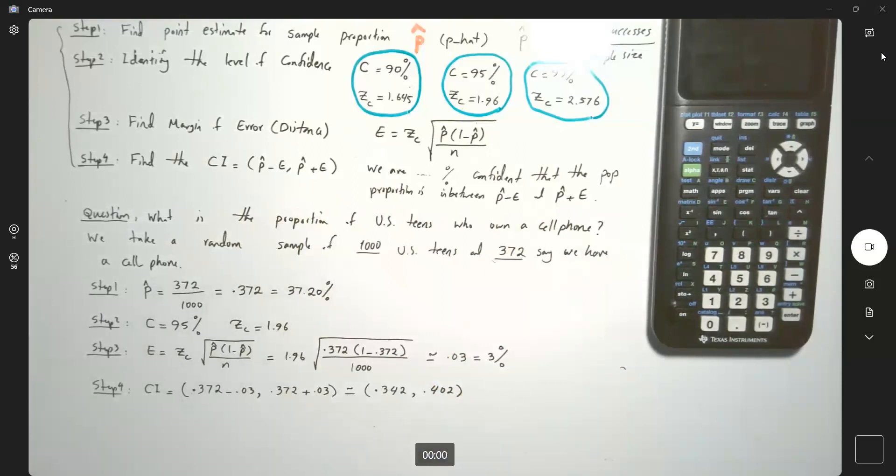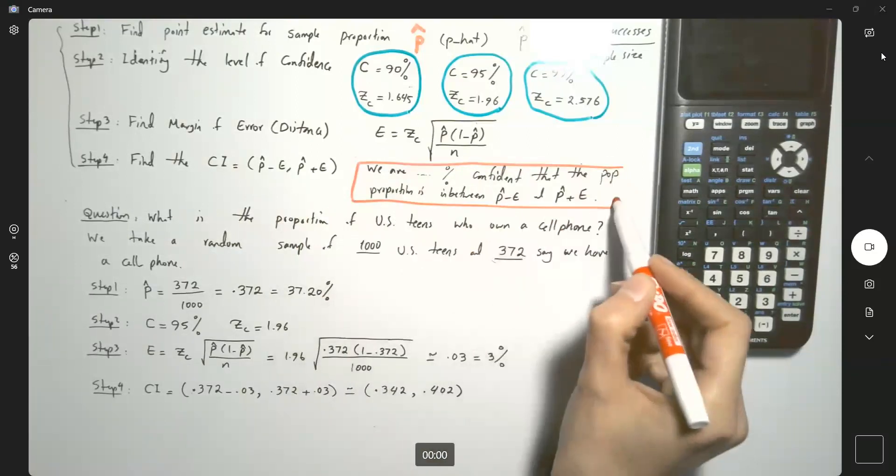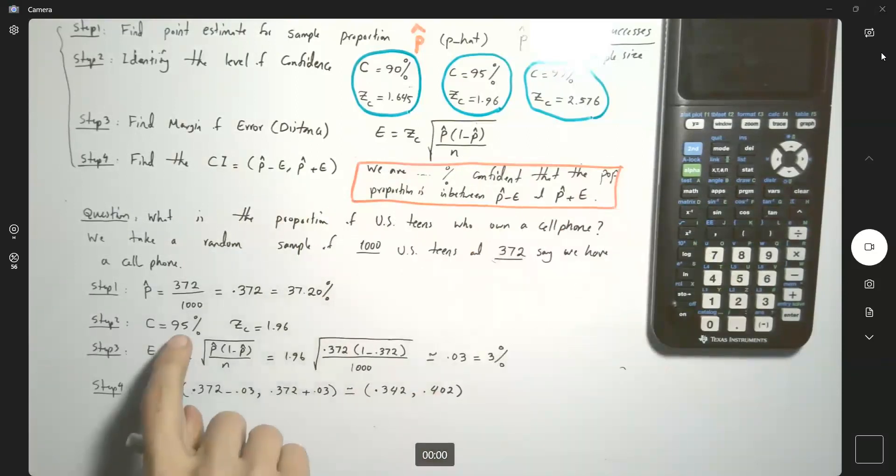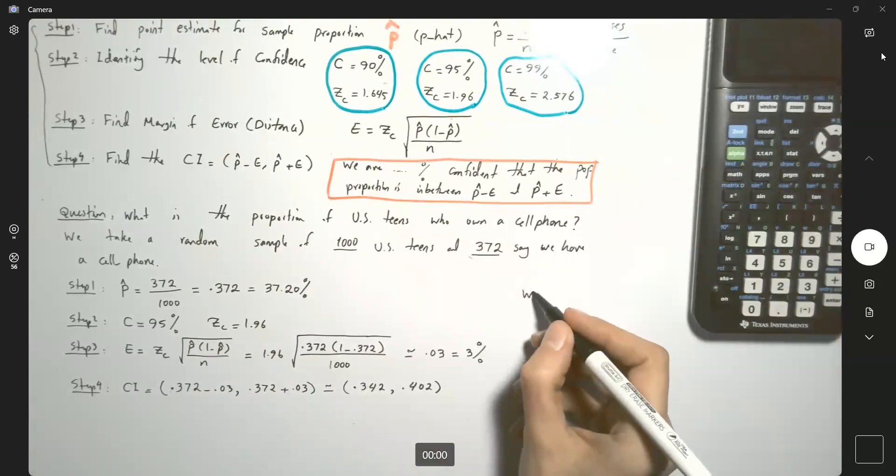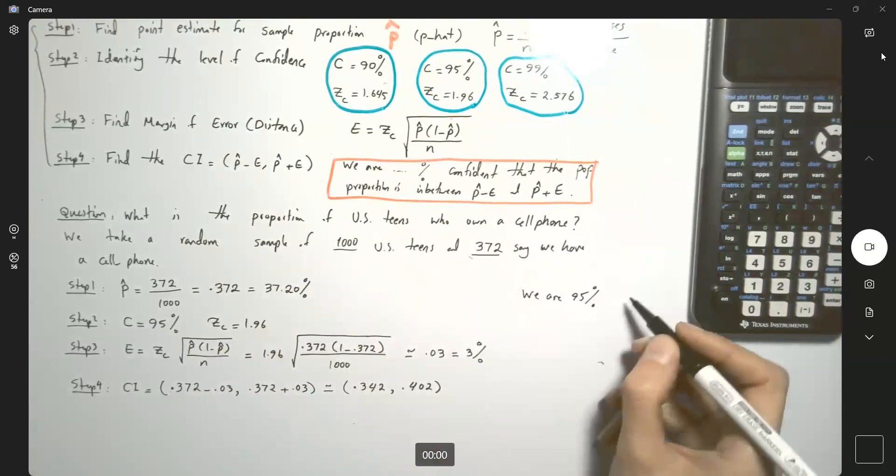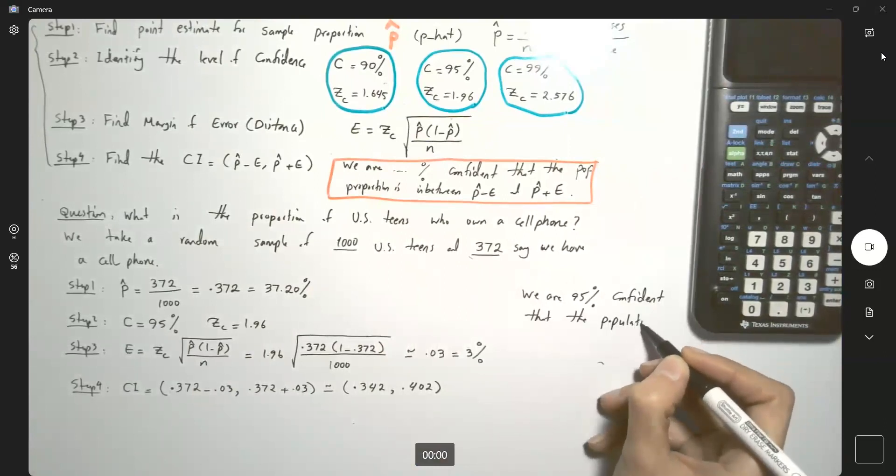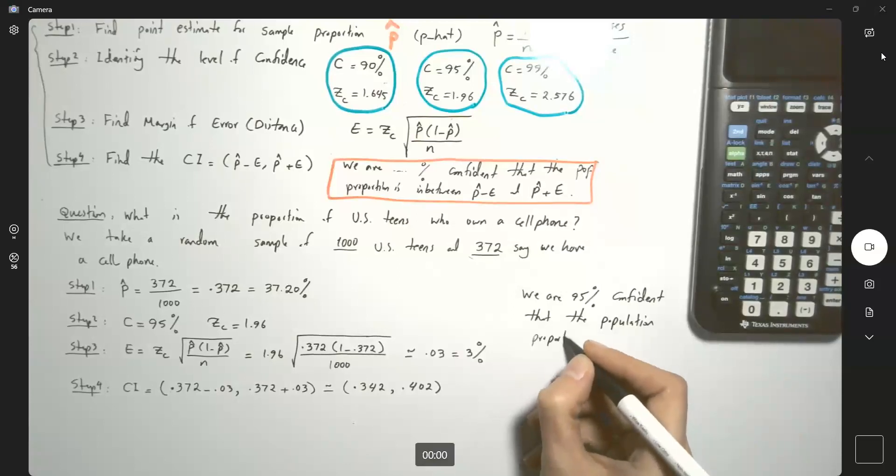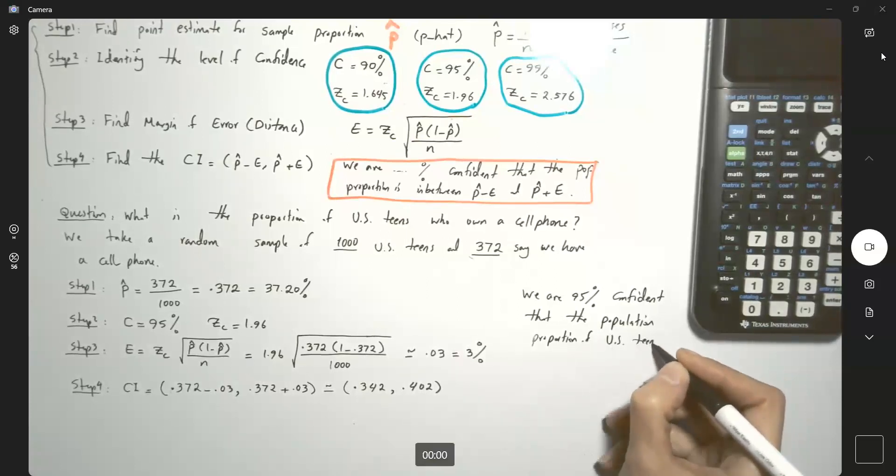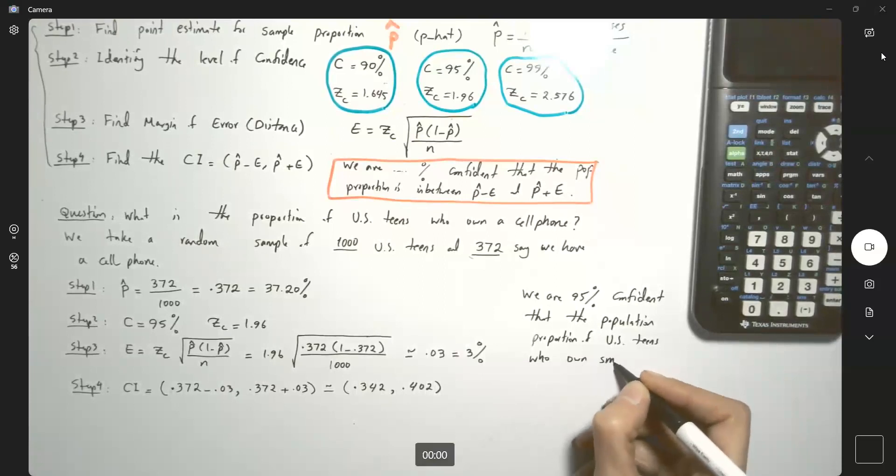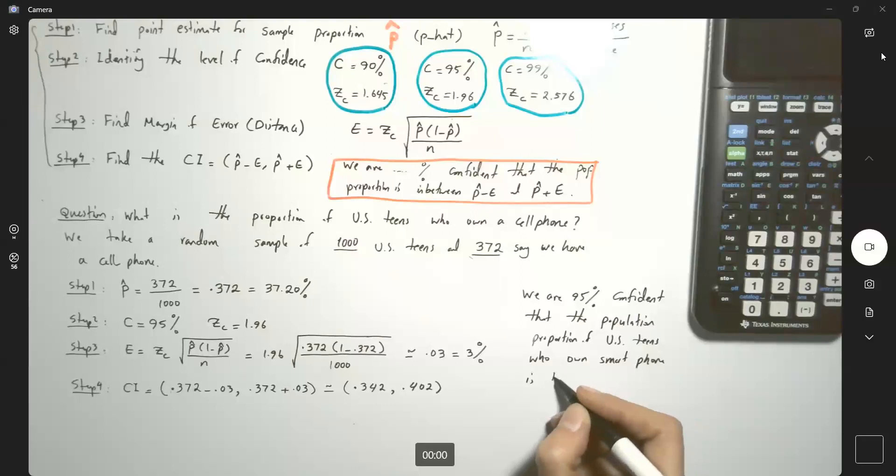And don't forget to write a couple of sentences here. It's for your report, in the project, in the exam, in the homework. We are 95% confident. And remember that the level of confidence is not given, so always use 95%. We are 95% confident that the population proportion of U.S. teens who own a smartphone is between 34.20% to 40.20%.